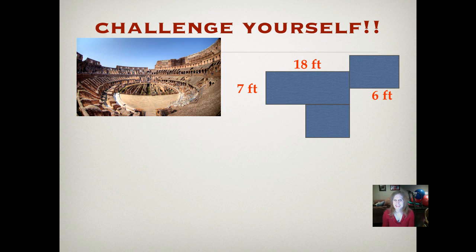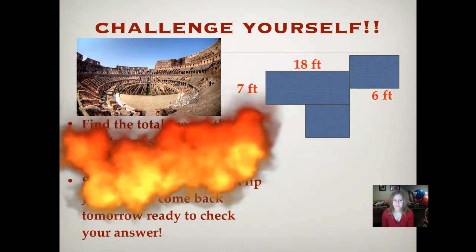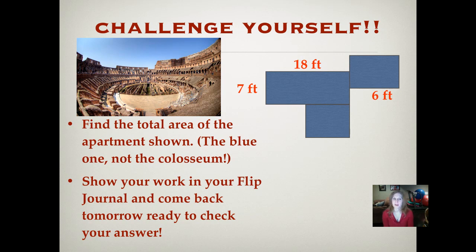It's time to challenge yourself. That is the inside of the Coliseum. Find the total area of the apartment shown. And I'm talking about the blue apartment floor plan over there, not the Coliseum. The area of the Coliseum is really huge. In fact, it's amazing to think that they were able to actually cover that with kind of sails that pulled together at the top to shade people. Go ahead and use what you know in that picture. And not all of the numbers are written out, obviously, for you. So you'll have to really think about what you're looking at. And then come back tomorrow, show your work in your journal, and we will check it out. I hope everyone tries the challenge problem tonight. Challenge problems are really good for growing muscles in your brain.